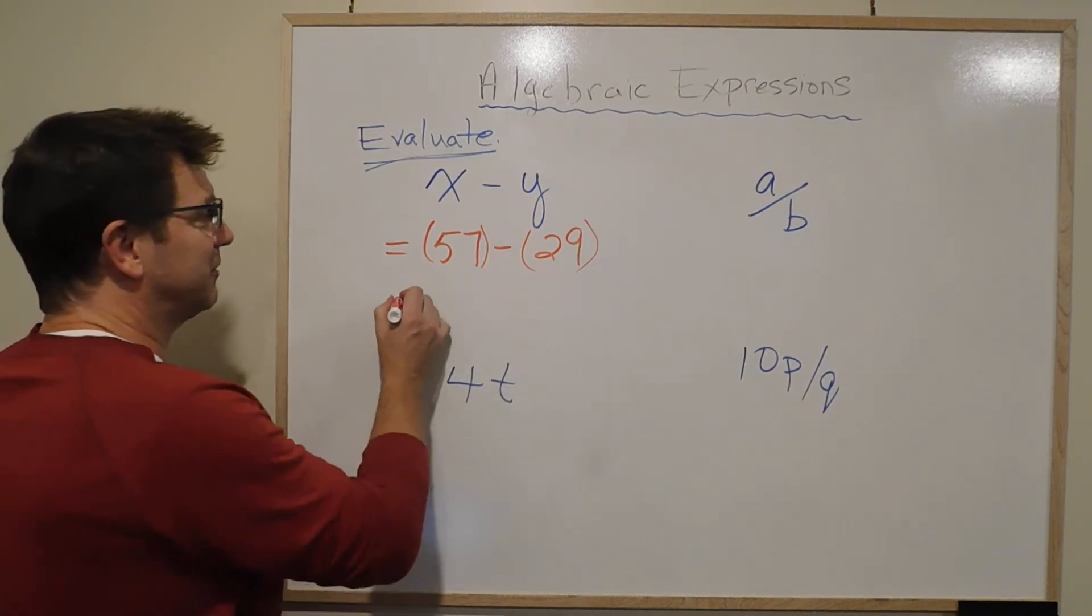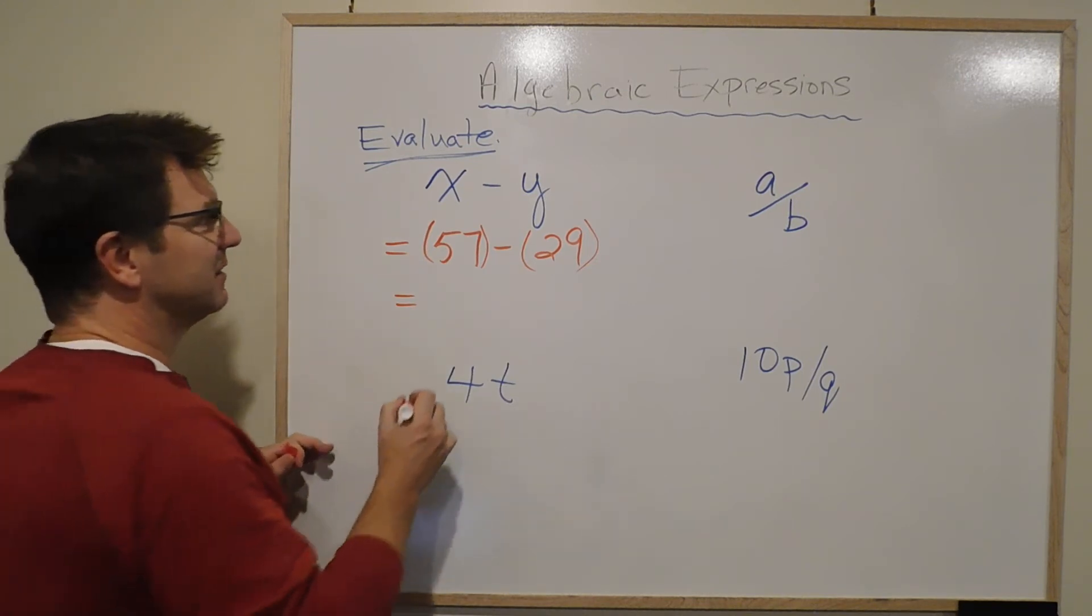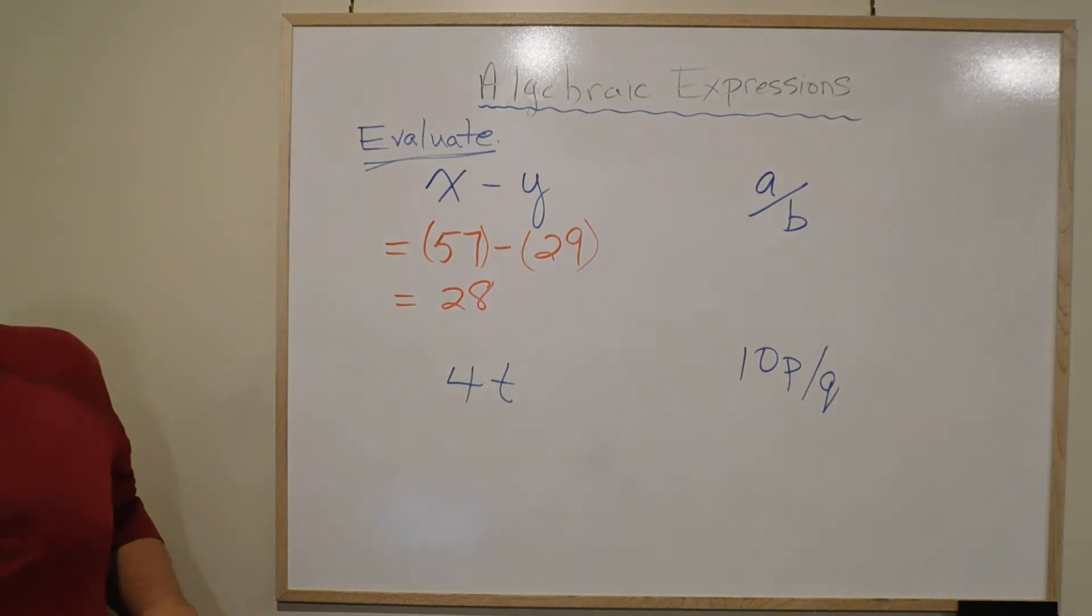And then we just do a little subtraction. 57 minus 29 looks to me a lot like 28. And that's how we got the answer that is there on the sheet.